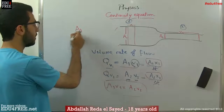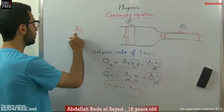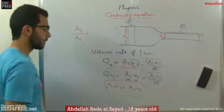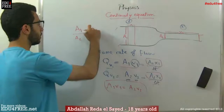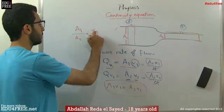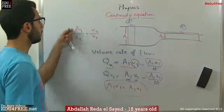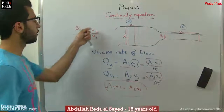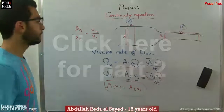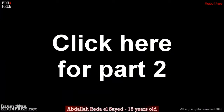A1 over A2 is inversely proportional to the velocity of the liquid. So A1 over A2 equals V2 over V1.